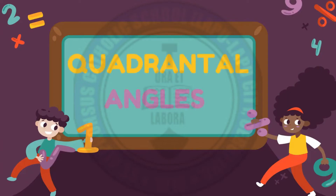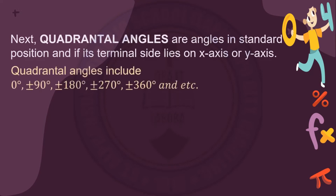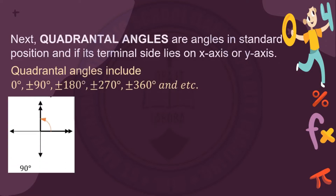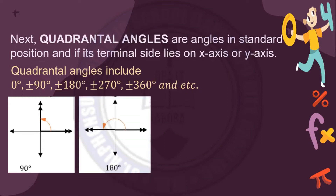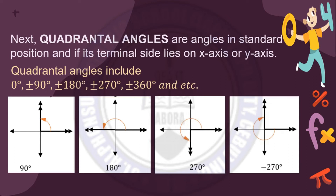Next are the quadrantal angles. Quadrantal angles are angles in standard position whose terminal side lies on the x-axis or y-axis. Quadrantal angles include 0 degrees, positive or negative 90 degrees, positive or negative 180 degrees, positive or negative 270 degrees, positive or negative 360 degrees, and so on.